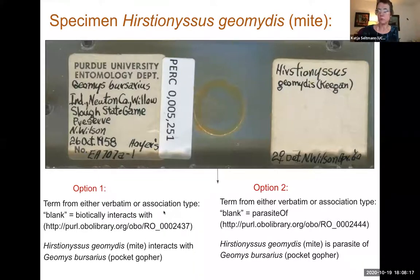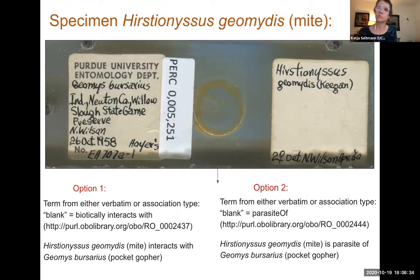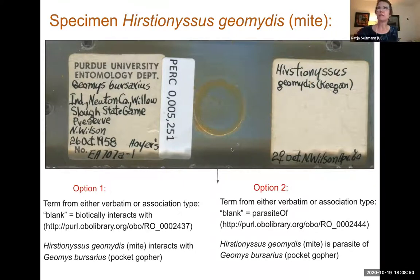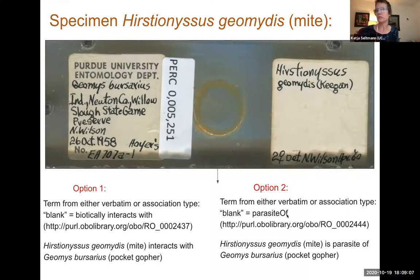Option one would use the RO URI so that the translation would be 'mite interacts with pocket gopher.' Option two is a translation that could occur because the collection manager actually knows more — for example, that the collector Wilson was a parasitologist who collected mites off of animals throughout their career. The collection manager or parasitologist may also know that this species of mite is an ectoparasite of a particular species of pocket gopher, even though this information is not on the specimen. So option two would be 'parasite of,' providing more detailed and potentially more valuable research information.